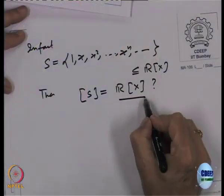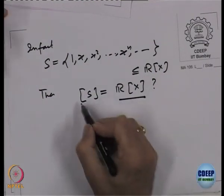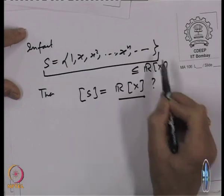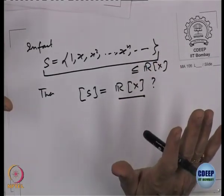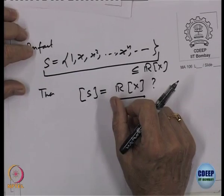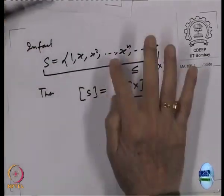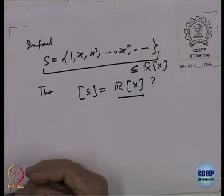Why does the infinite set generate R[x]? Because if I take any polynomial in R[x], it will be a polynomial of some finite degree n. Then the linear combination of {1, x, ..., xⁿ} will give me that polynomial. So we have a set of generators which is infinite, and no finite subset of R[x] will generate R[x]. R[x] is a vector space which is non-finitely generated — you can call it infinitely generated.